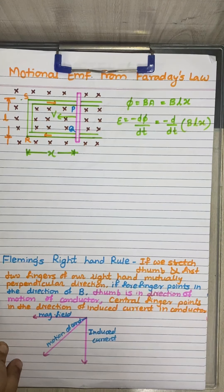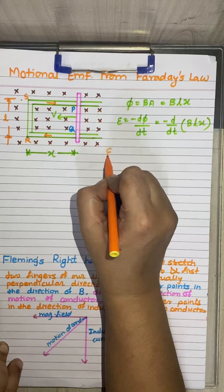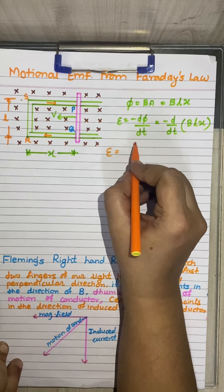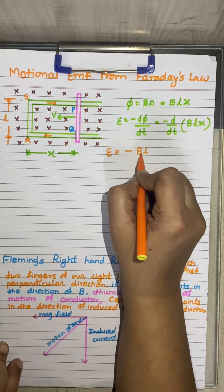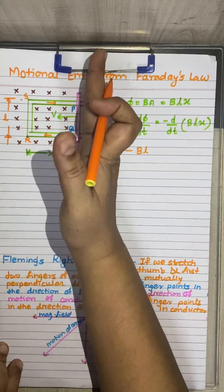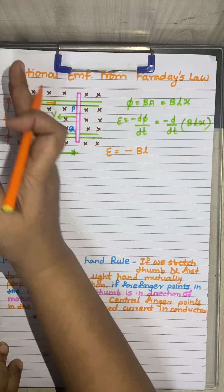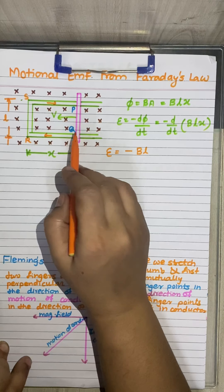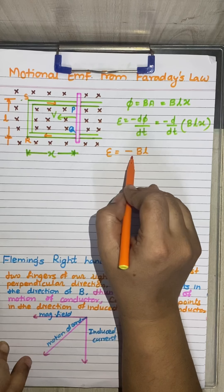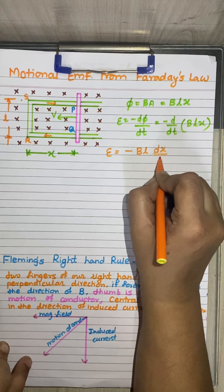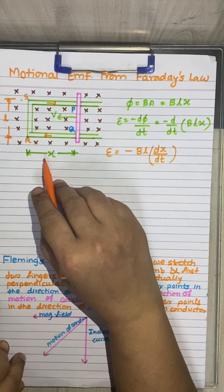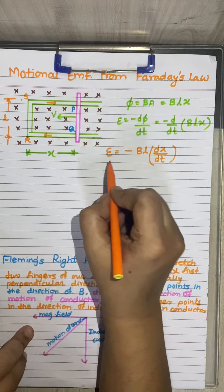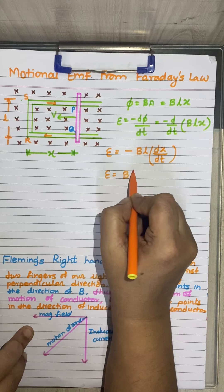Differentiating, E = −BL(dX/dt), since B and L remain constant and only X changes as the conductor moves inward. Therefore, E = BLV.